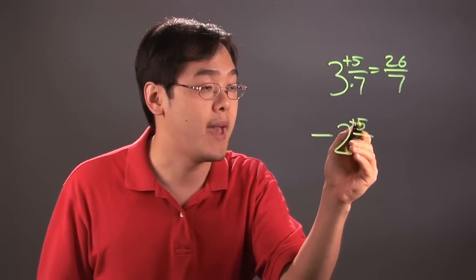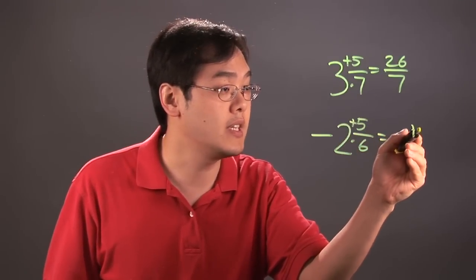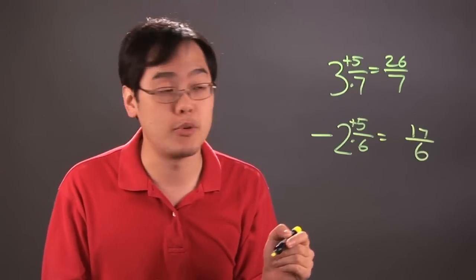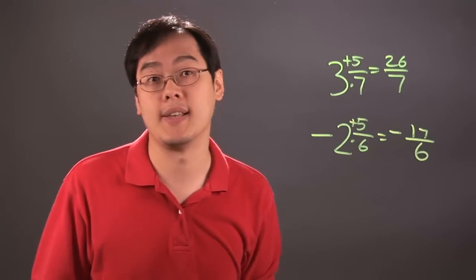So 6 times 2 is 12, add the 5 is 17. So you have 17 and then always keep the denominator which is 6. But remember the original number is negative so I'm keeping the negative as is.